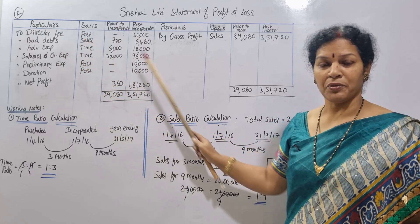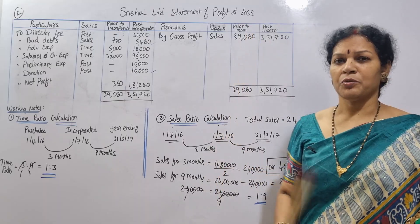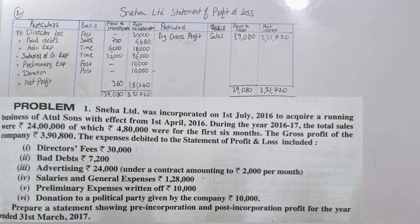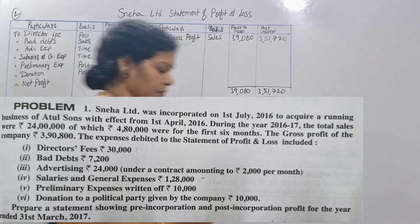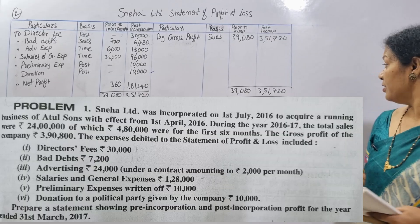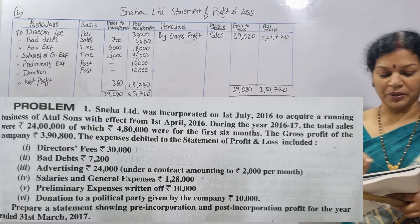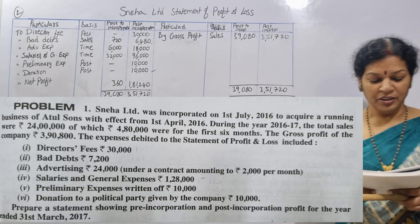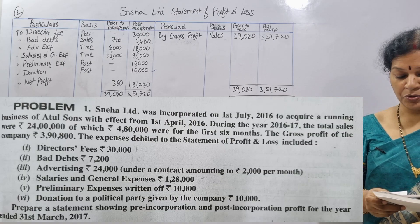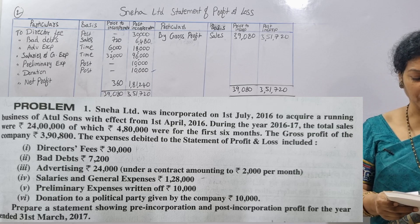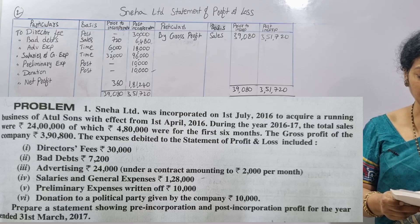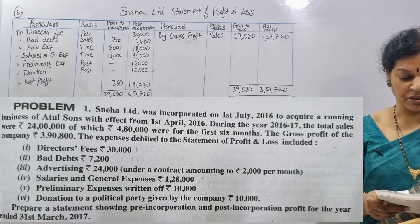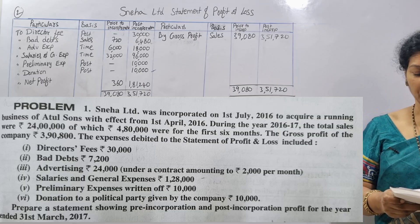The debit side will have 4 columns and the credit side will also have 4 columns. Now let me explain the problem with a note. Sneha Limited was incorporated on 1st July 2016 to acquire a running business of Atul Sons with effect from 1st April 2016.